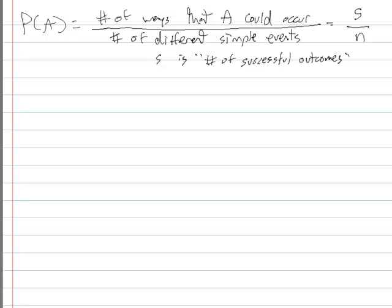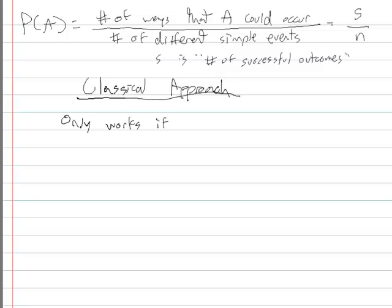And then N, of course - N is sample size. We used that in the last chapter. N is the size of the sample space. So consistent terminology there. This is referred to as the classical approach. And it relies on, this only works if all simple events have equal chances.